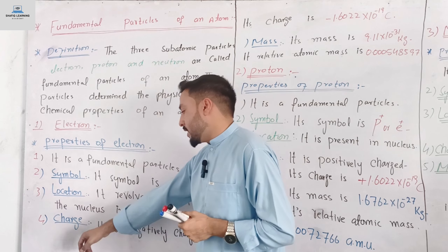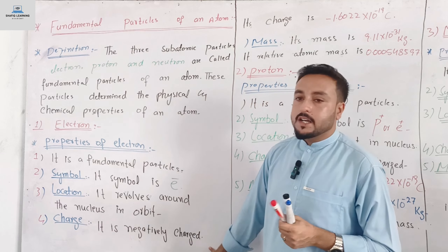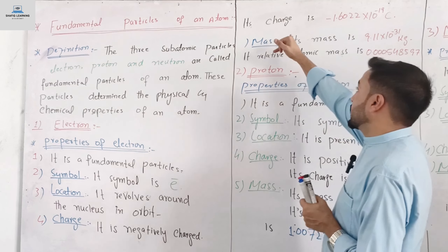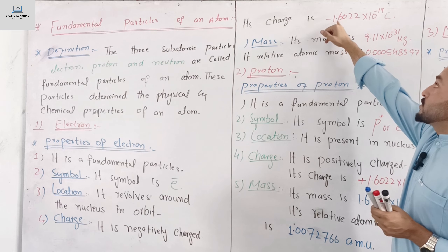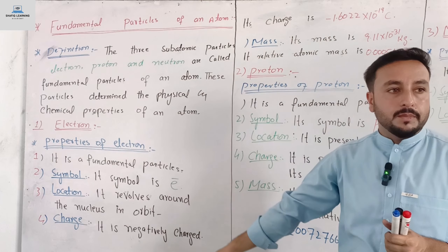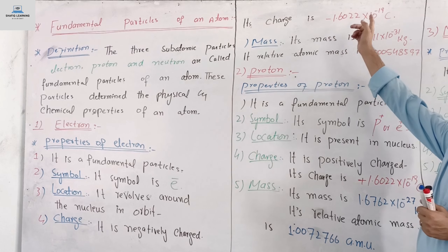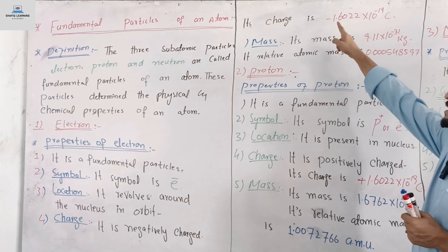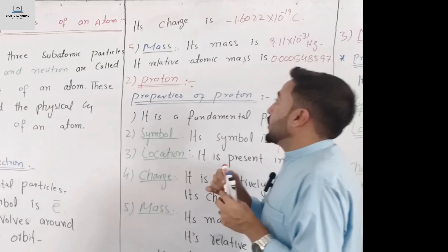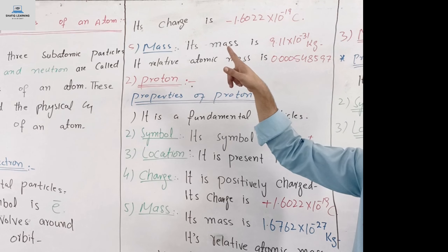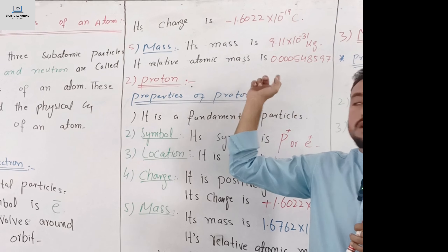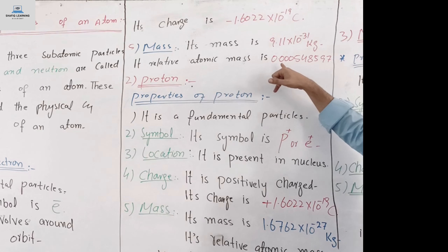The electron carries a negative unit charge. Its charge is negative, equal to minus 1.6022 × 10⁻¹⁹ coulombs.